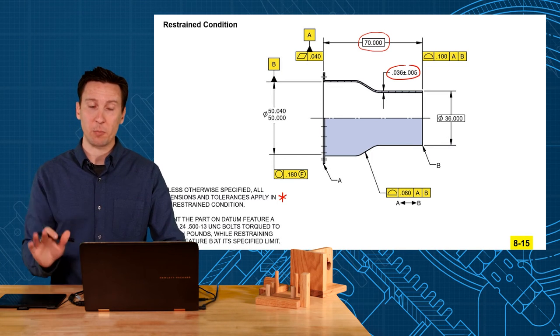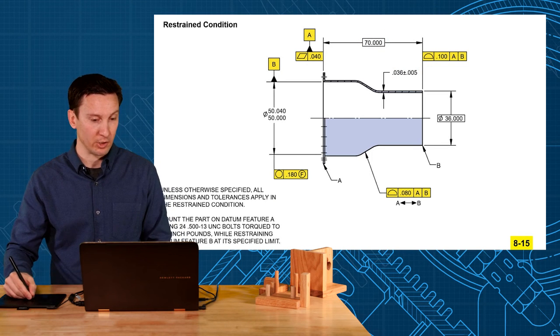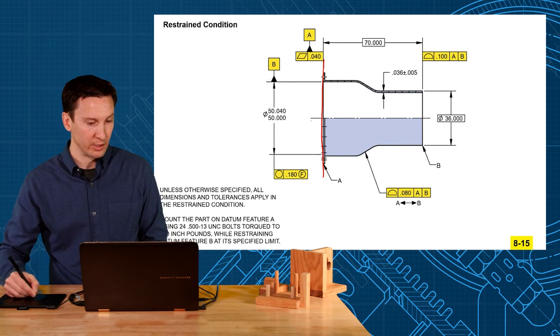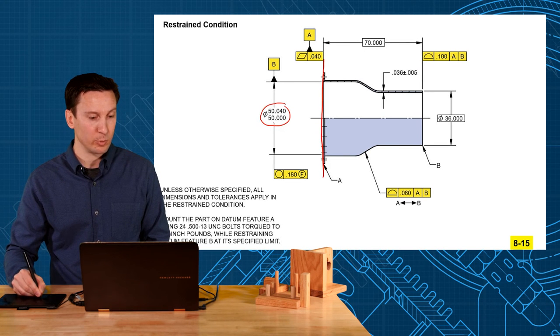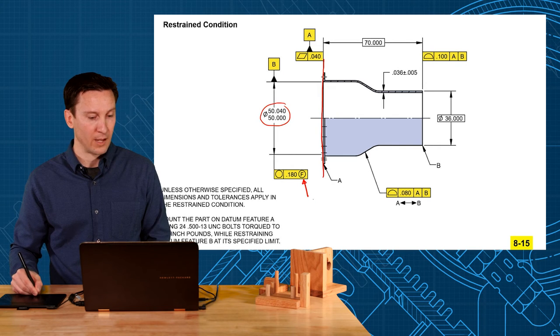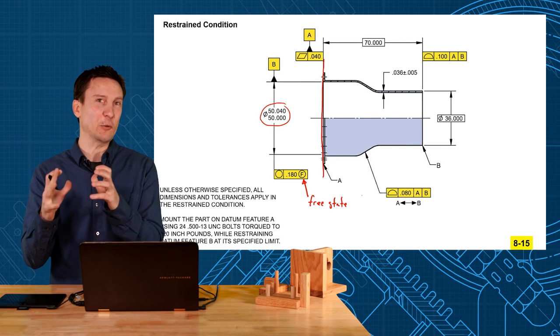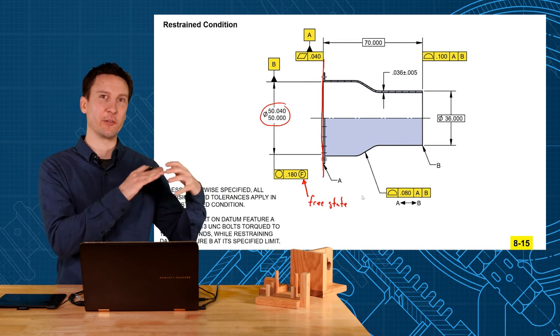So now everything on this part will be measured in the restrained condition. So A needs to be flat in the restrained condition, the size for B is in the restrained condition, and this circularity has a free state modifier. So the free state modifier is bringing you back to the original default of free state.